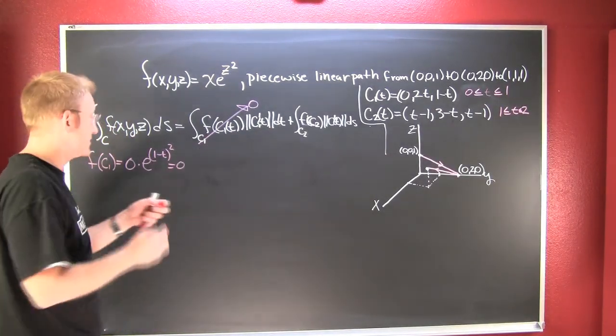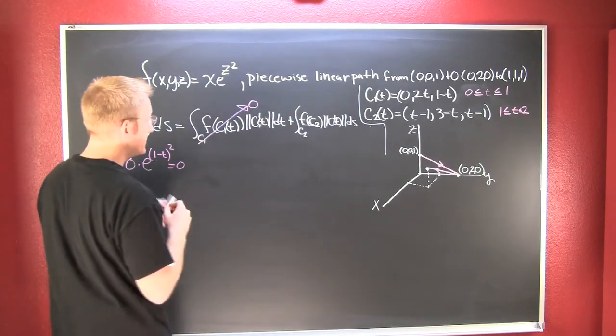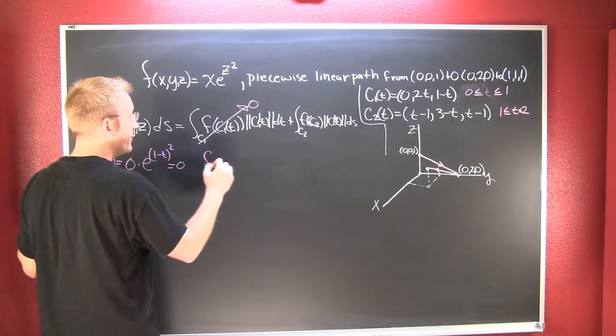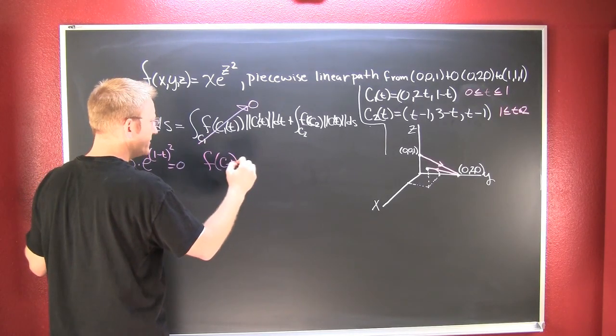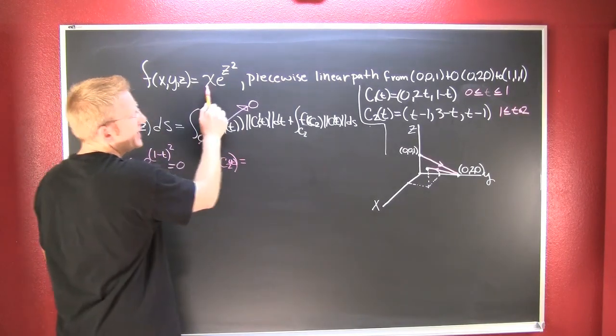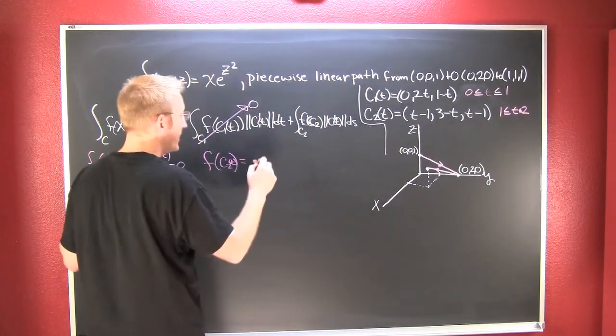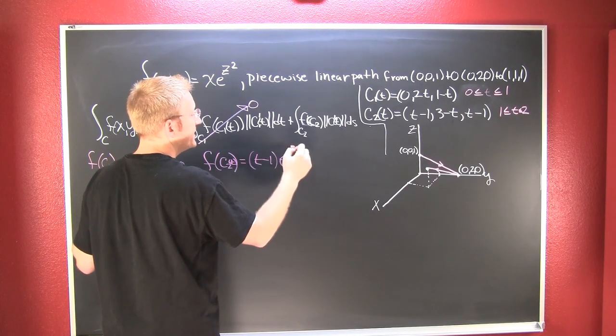Great, that's only going to leave us our second piece. Let's take a look at our second piece. For our second piece we need to find f(c2(t)). That says everywhere I see x I'm going to put a t-1, e to the z, and in this instance z is (t-1)².